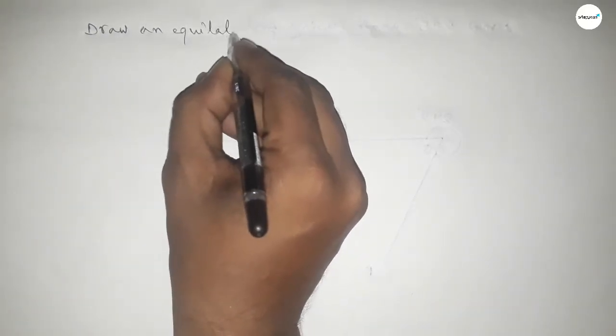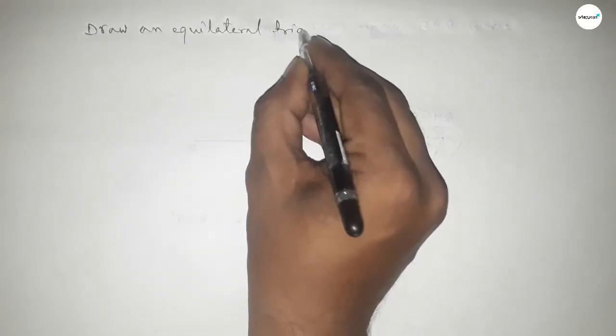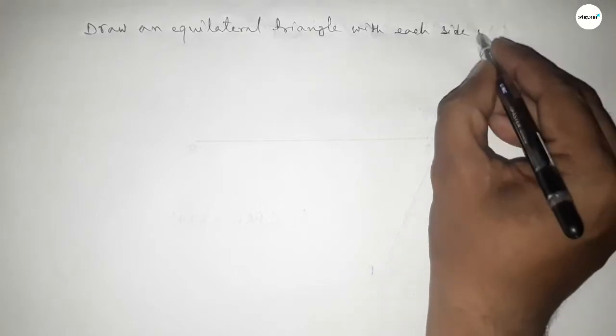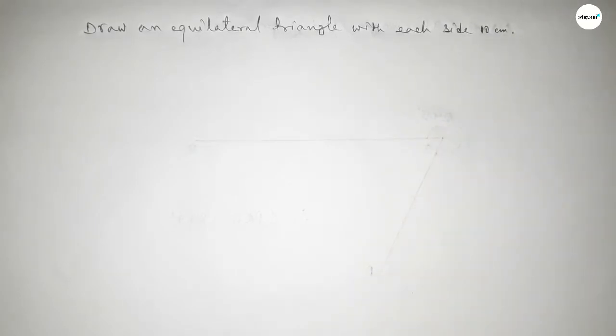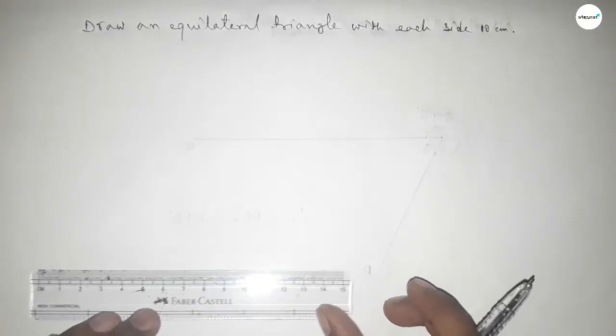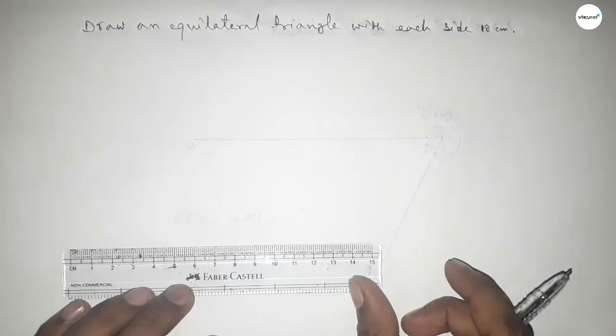Hi everyone, welcome to SSR Classes. Today in this video we have to draw an equilateral triangle with each side 10 centimeter. So let's start the video. First of all, we have to draw here a line of length 10 centimeter.